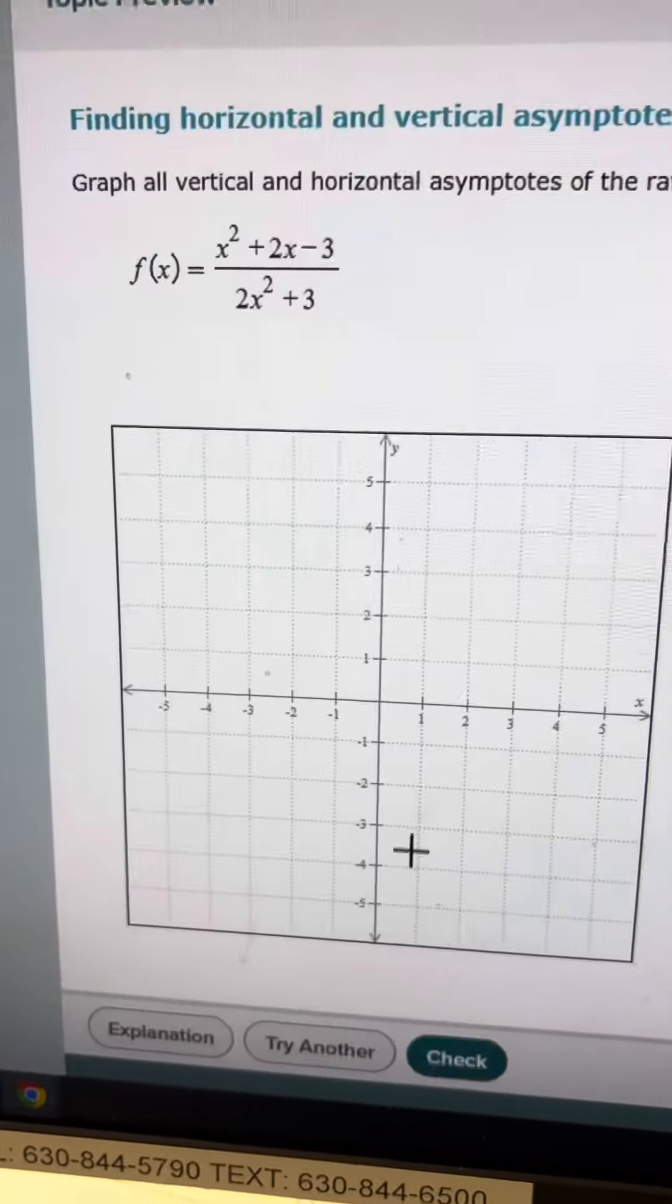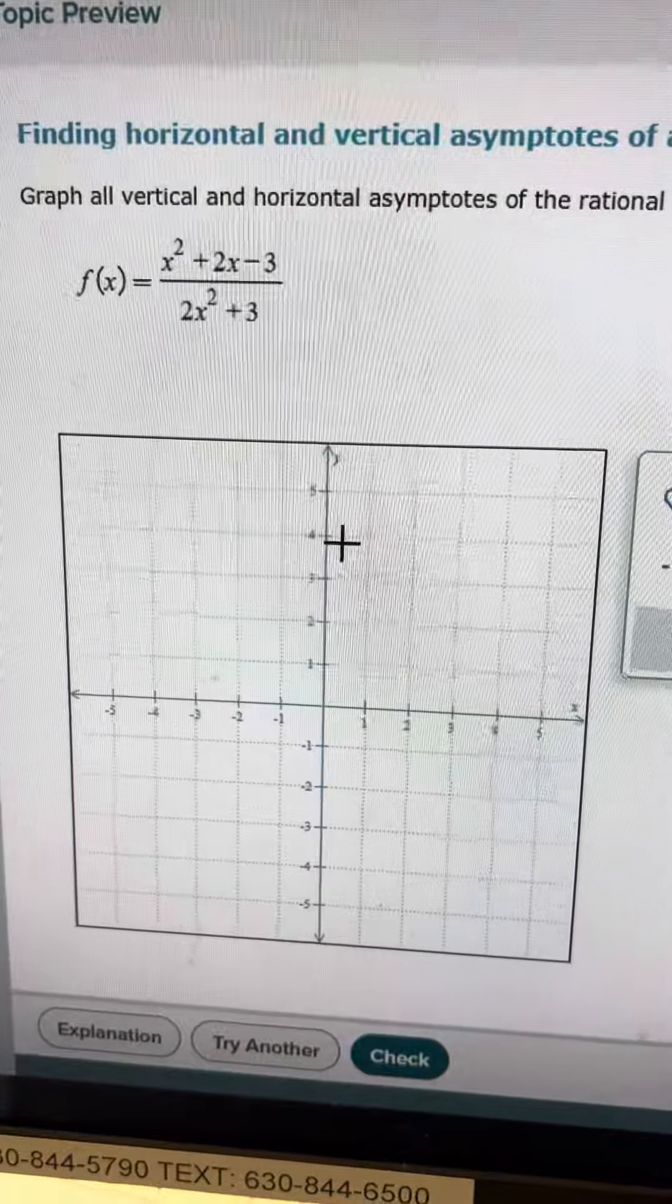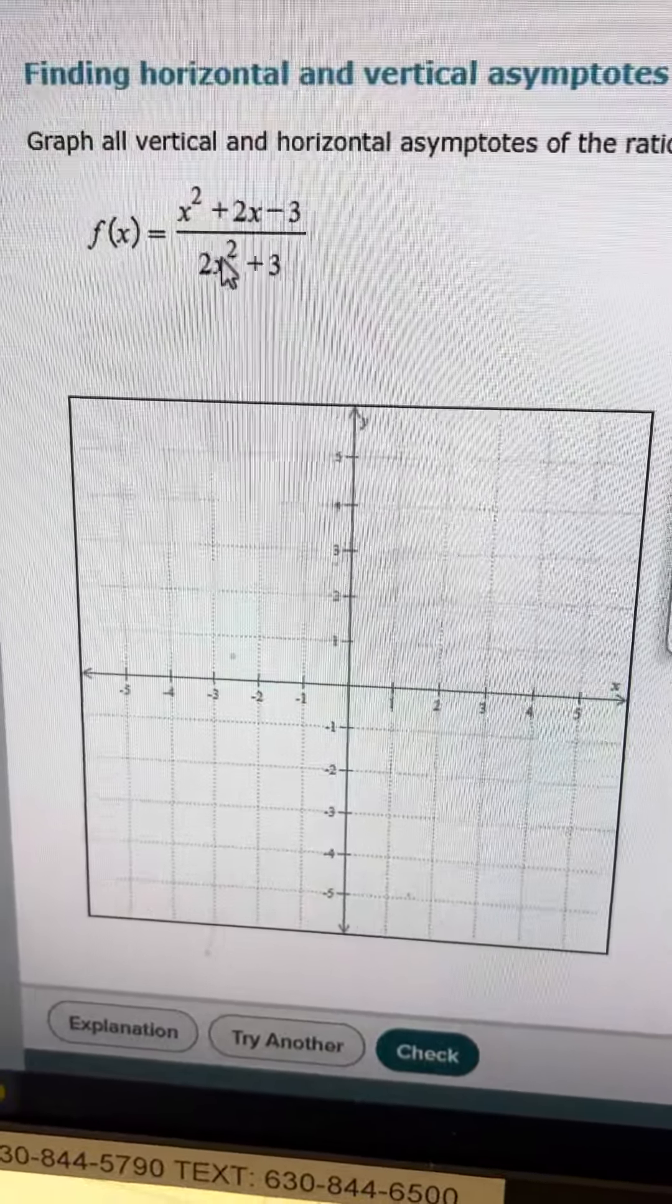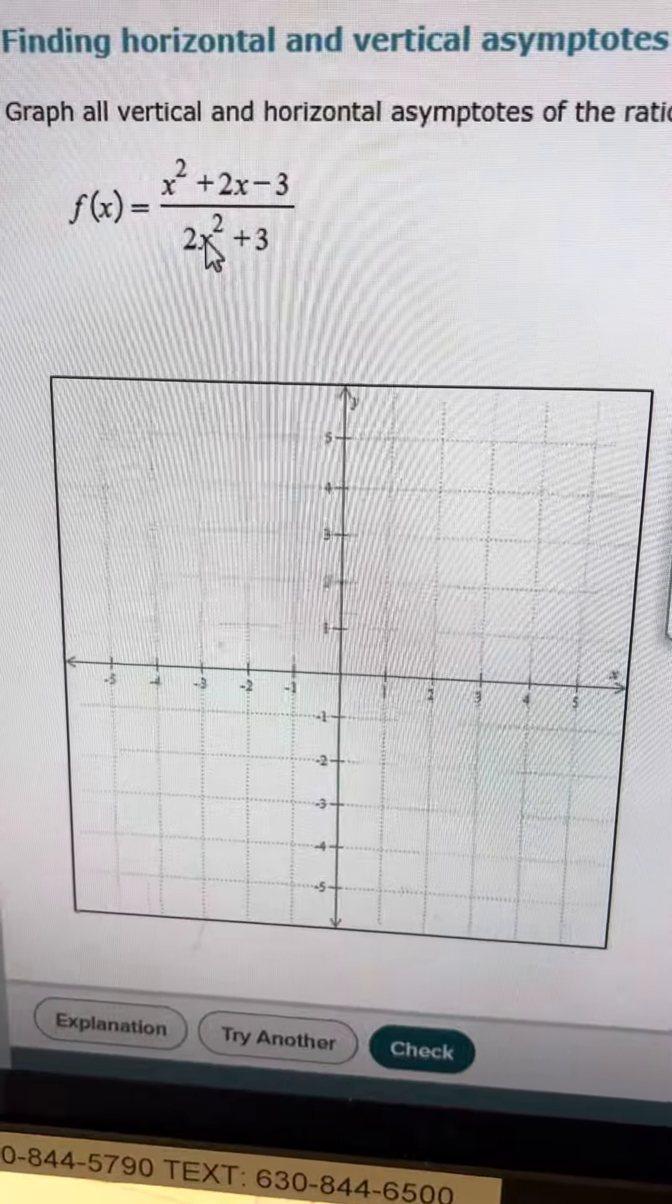Let's try another one. So here we have 2x squared plus 3 on the bottom, so that will never be 0,